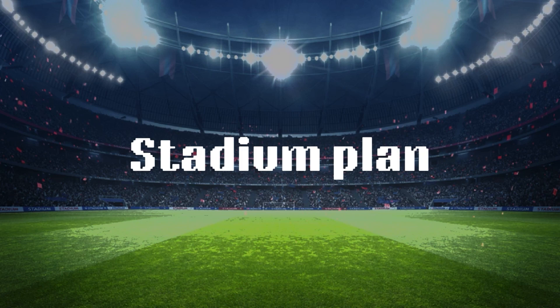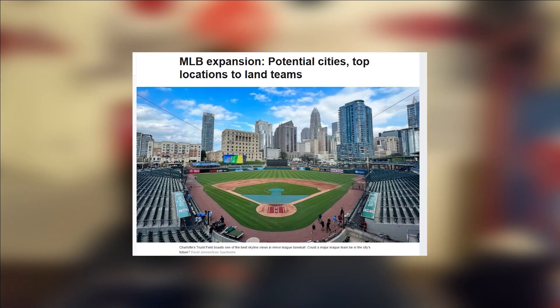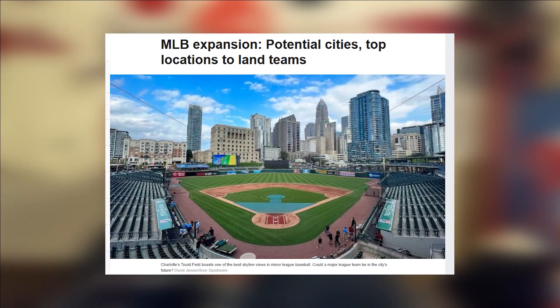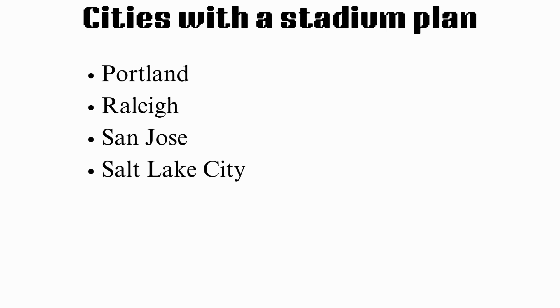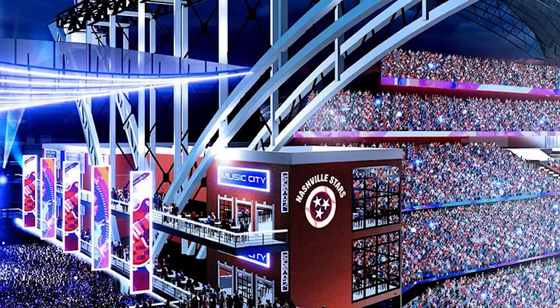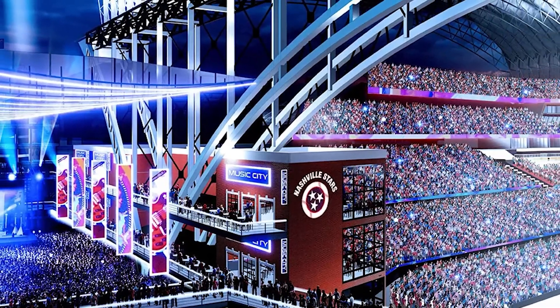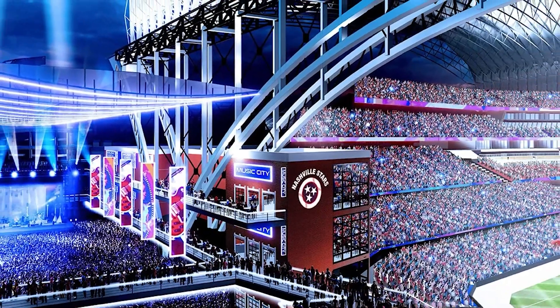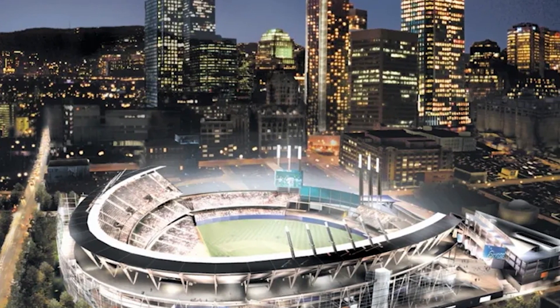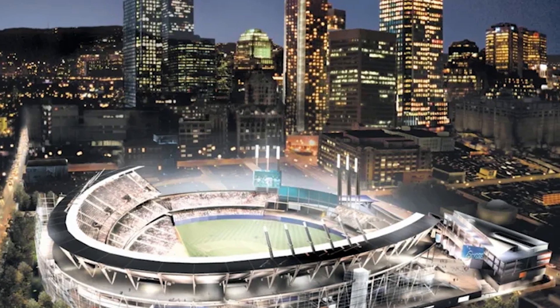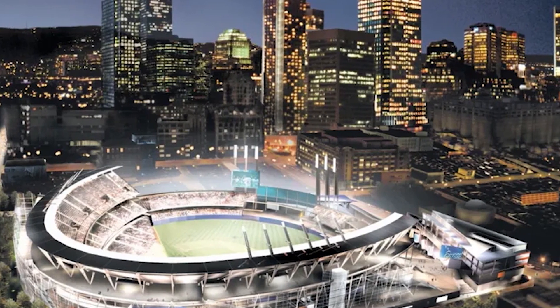Similar to ownership groups, a stadium plan is another variable that will use Evan Opperman's dummy variable system. In the same Doolittle article, a stadium plan is also discussed for the prospective cities. The cities that had a stadium plan in place were Portland, Raleigh, San Jose, and Salt Lake City. Because these cities are unique to the others in this way, it will be included in the formula with a weight of four. Stadium plans being in place has been a major selling point for MLB when looking at expansion cases in the past, which is why it appears in four bodies of literature for this study.